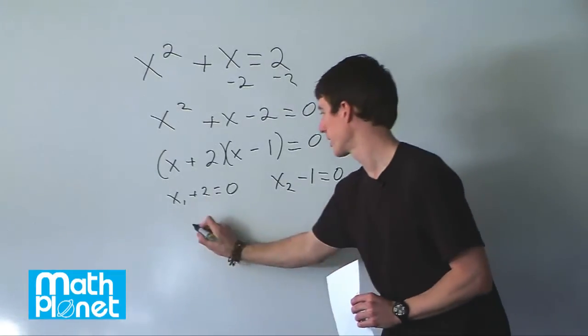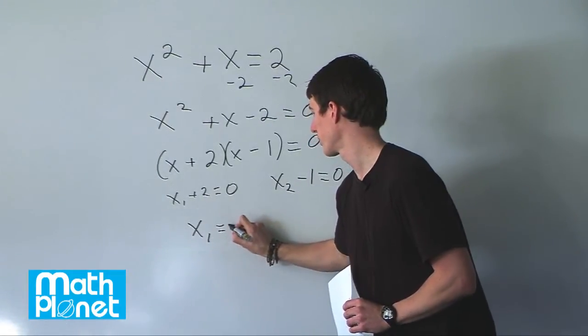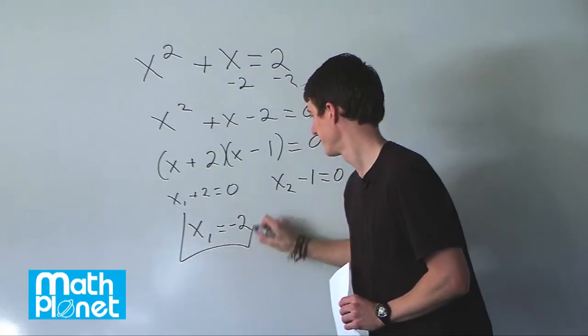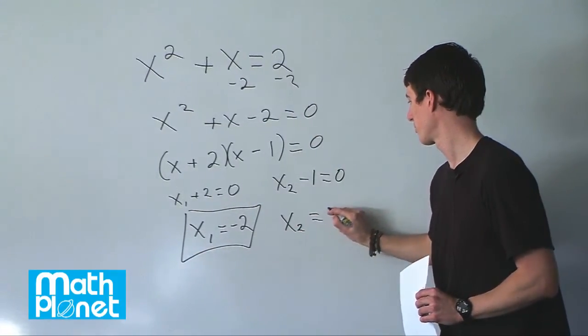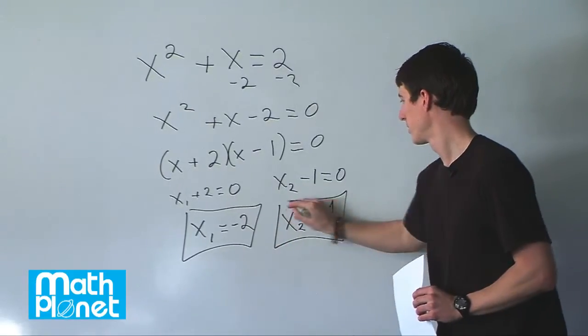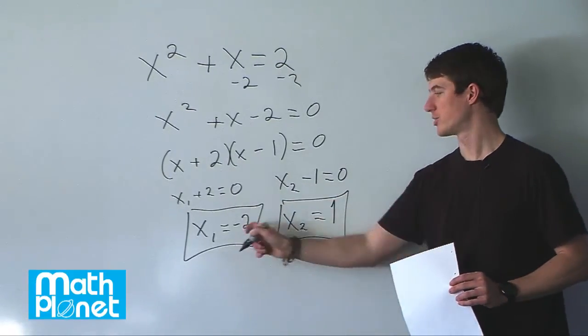Solving for this we get x one equals negative two and x two equals positive one. So we have a quadratic equation and two solutions.